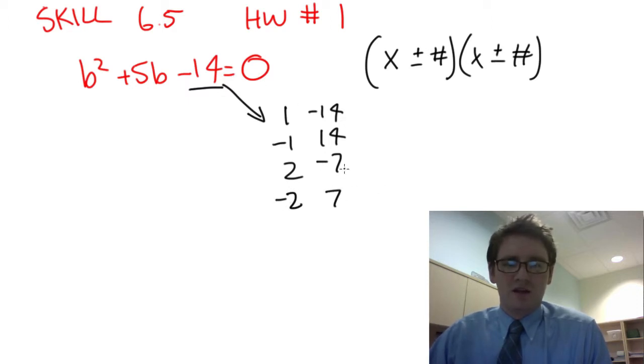There's really not many other factors. There aren't any more factors that multiply to negative 14, so this is what we're going to look at. So now that we've listed all of these, we need to look at the set that equals positive 5.